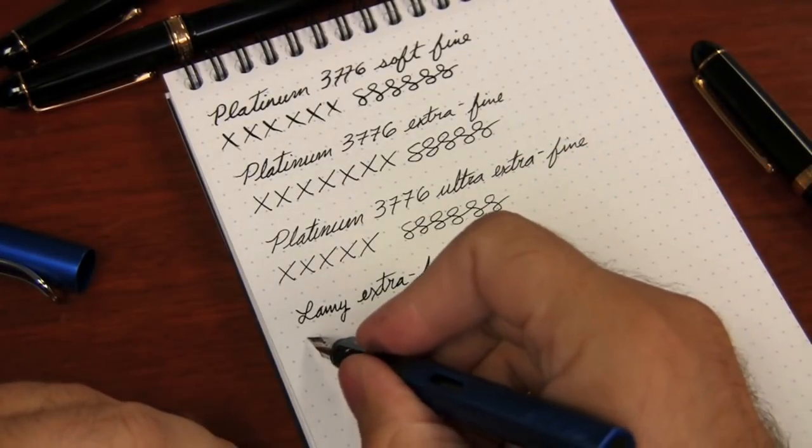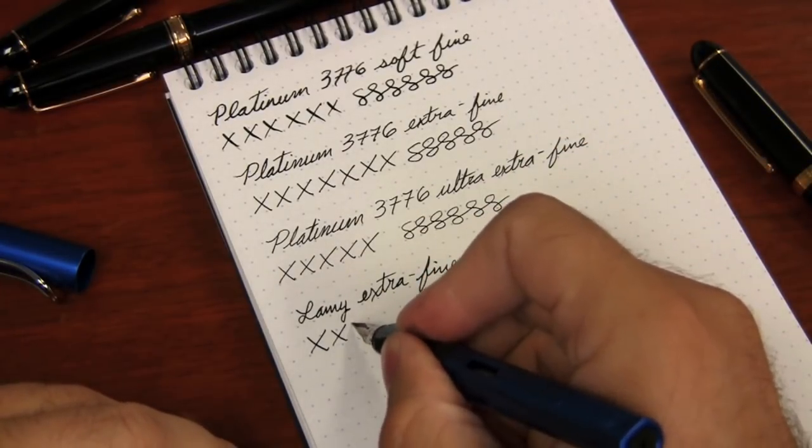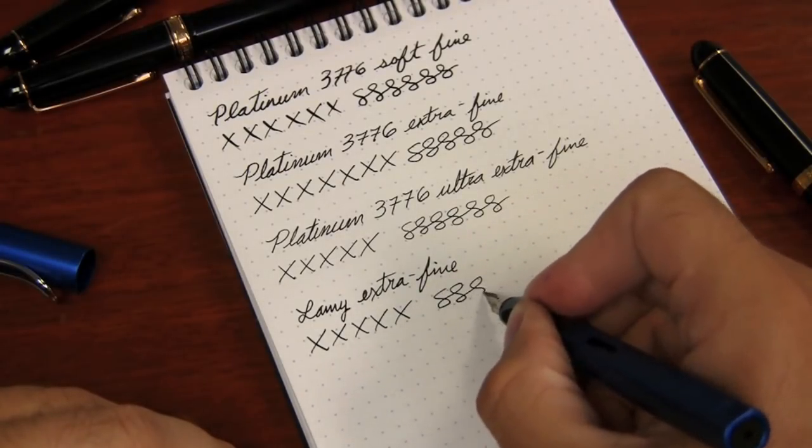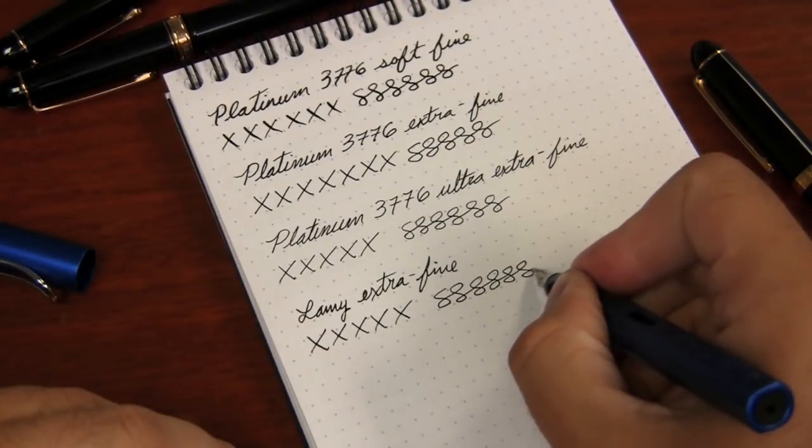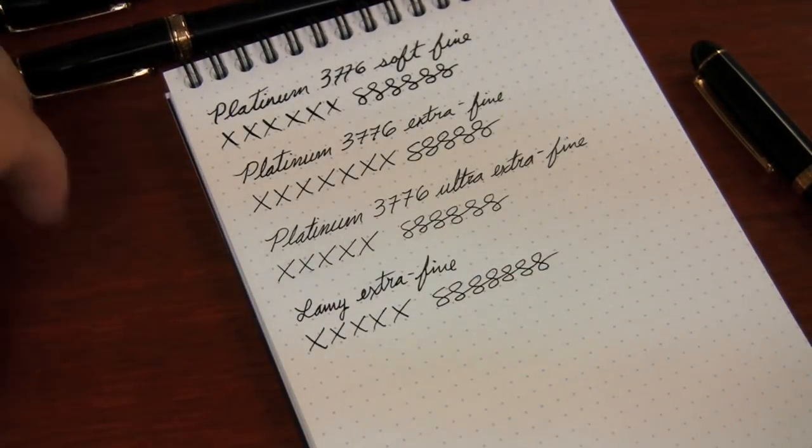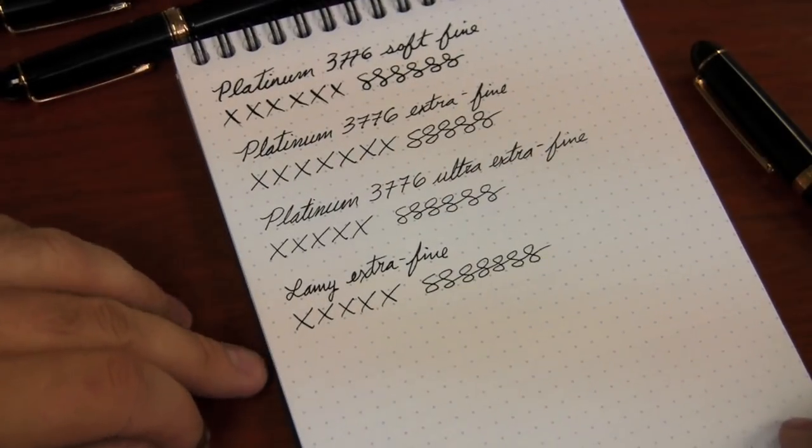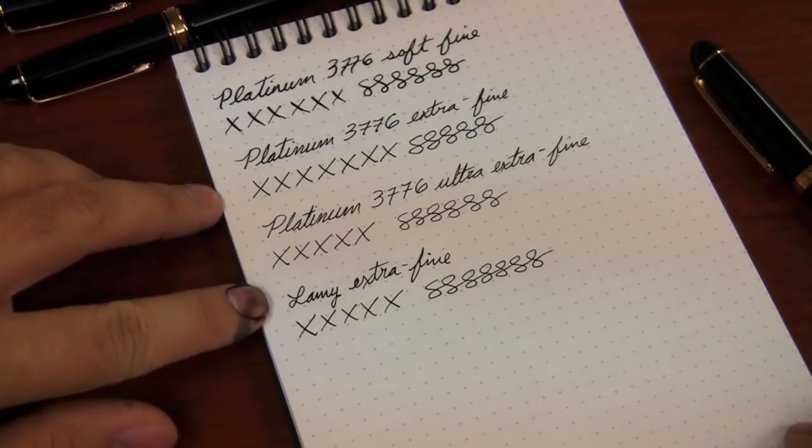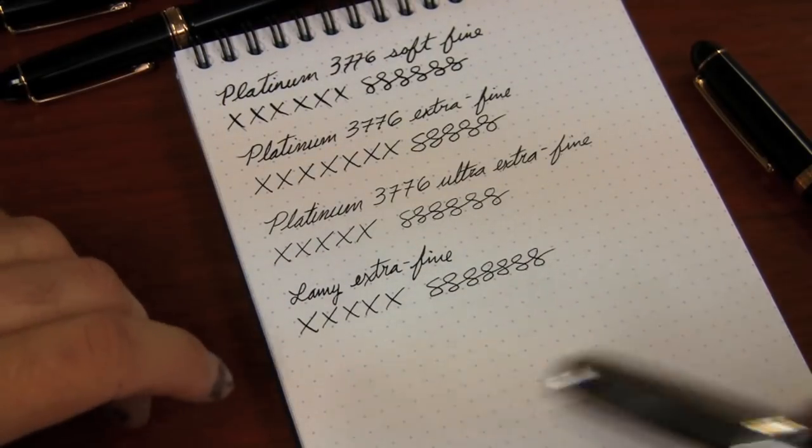So there's a Lamy extra fine. It's definitely a little scratchier than, of course you're talking about, this is like around $12 for this nib versus over a hundred for the platinum. But that gives you an idea there. The platinum extra fine is actually not too far off from the Lamy extra fine.